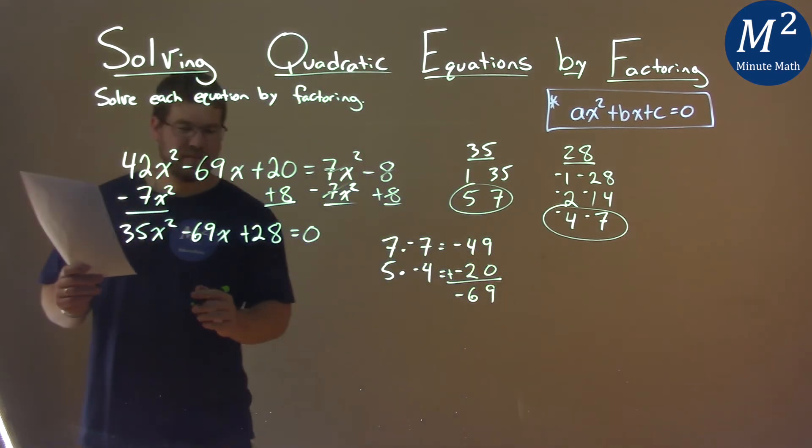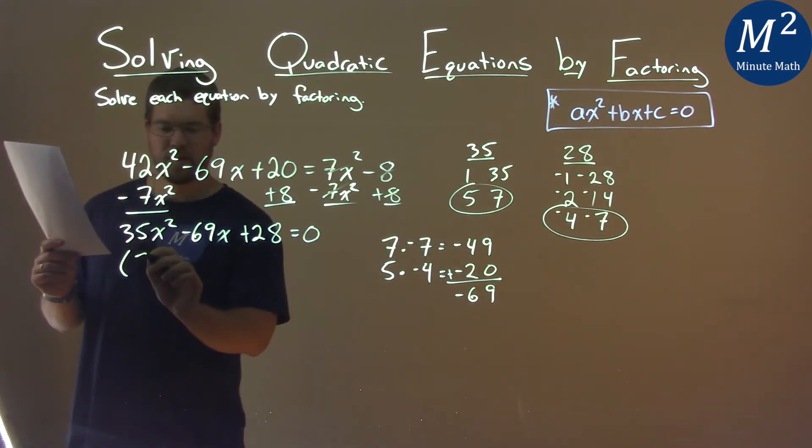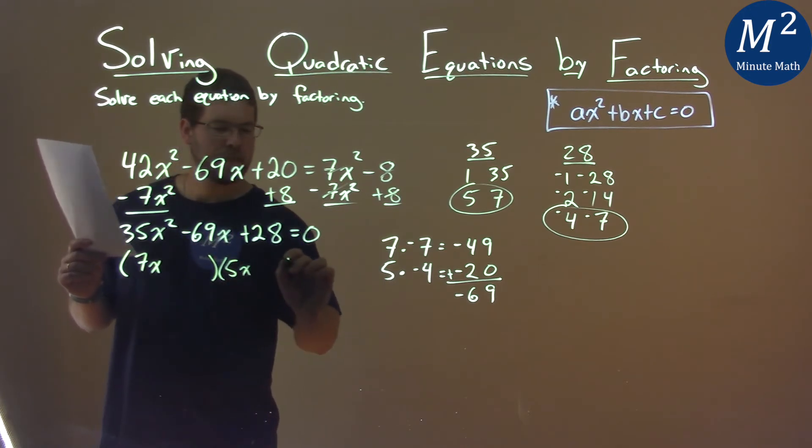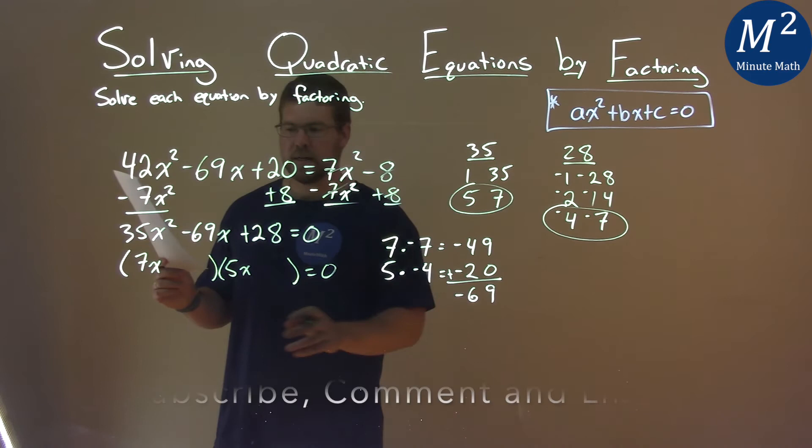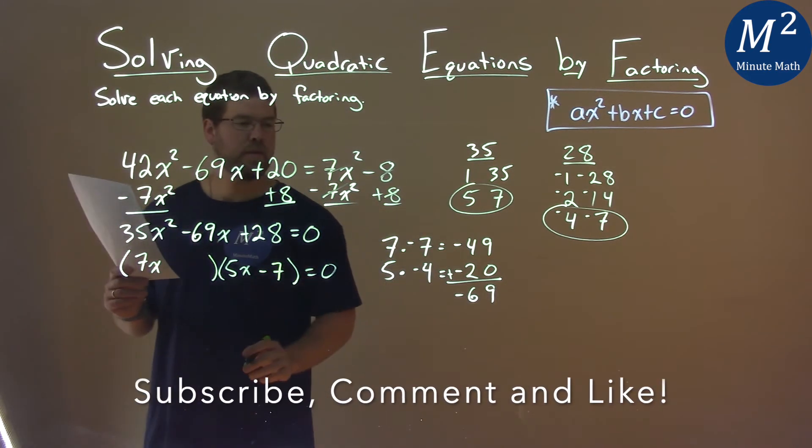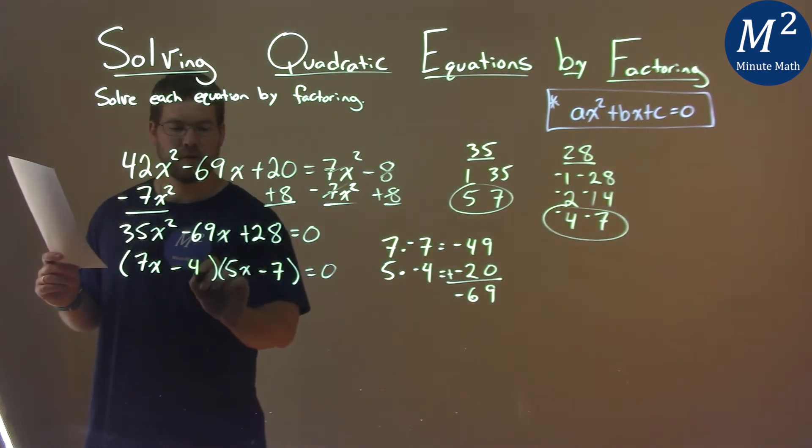So let's write this in factored form. We had, for the first pair, that has to be a 7 times an x, and then a 5x here equals 0. And then we put the c values in. Now, 7 got multiplied by the negative 7, so the minus 7 has to go on this side. And then the 5 got multiplied by the negative 4, so we put a minus 4 here.